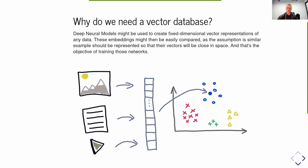Deep neural networks are quite good at creating vector embeddings for any type of data. We can take images, text, videos, or whatever data we like, put it through a properly trained deep neural network, and receive a single fixed-dimensional vector we can compare to other vectors. Similar objects will be similar to each other in this vector space. Quadrant as a vector database allows doing that efficiently because KNN doesn't scale well — if you have a few thousand points you may struggle, and with millions it won't be possible in production. We need this approximation to do it efficiently.